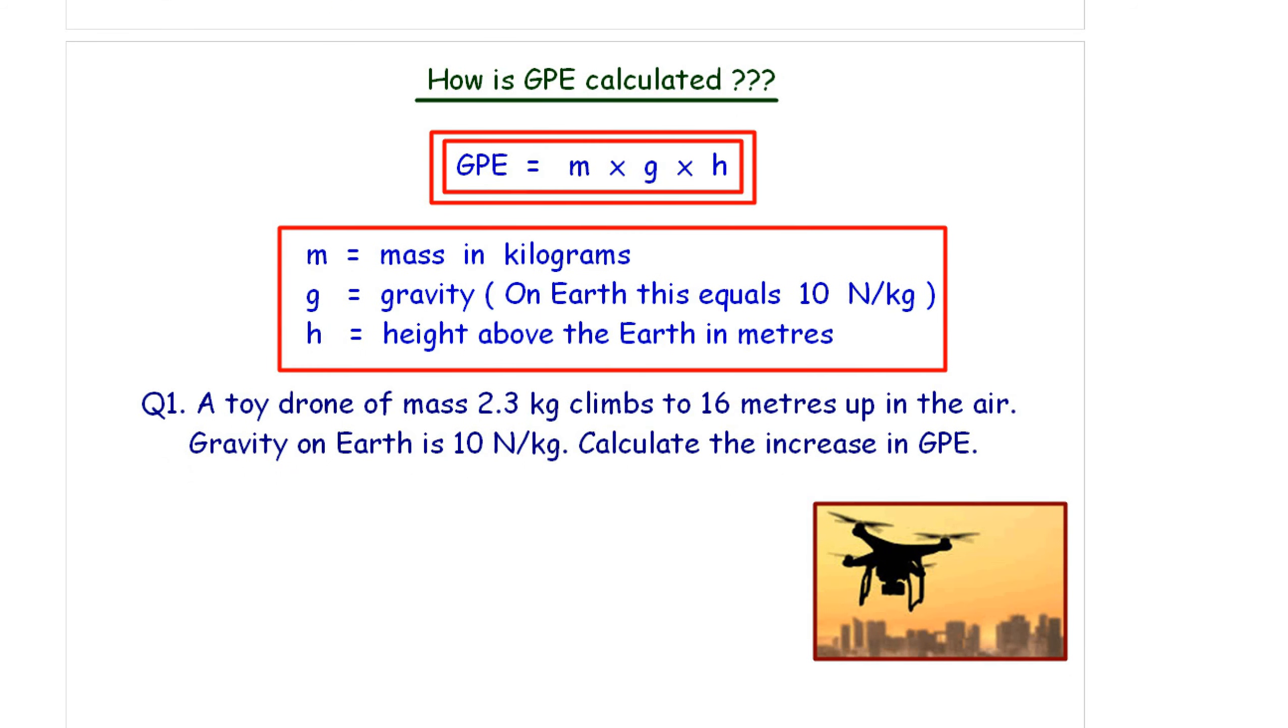Now, how is GPE calculated? We've got this equation. GPE is M times G times H. M is the mass in kilograms. G is the gravity. And on Earth, gravity equals 10 newtons of force for every single kilogram. And H is the height.